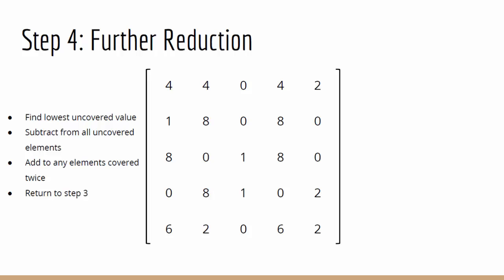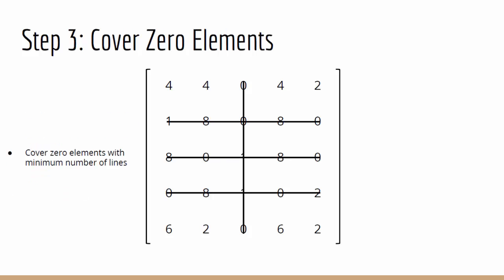After this is done, we can return to step 3 with our reduced matrix, and once again cover all the 0s with the minimum number of horizontal and vertical lines, which in this case is 1, 2, 3 and 4.